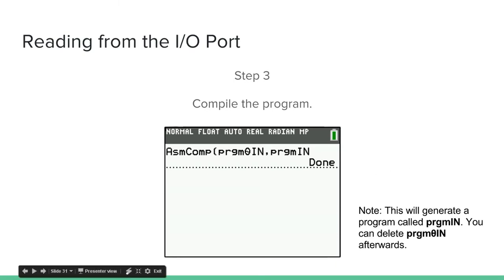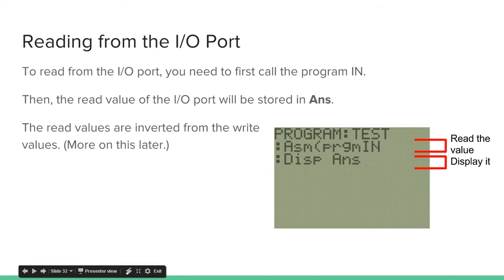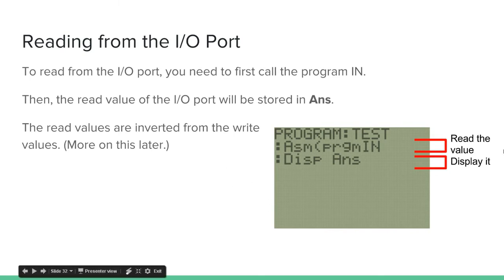This will generate a program just called N. You can delete Theta N afterwards — you don't need it anymore, just the program N. To read from the I/O port, you first need to call program N, and then the read value of the I/O port will be stored in Ans. The read values are inverted from the write values — we'll look more on this later.